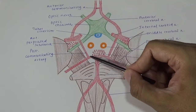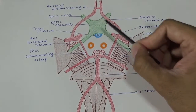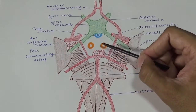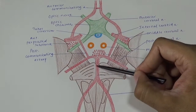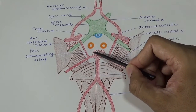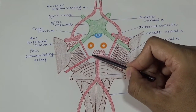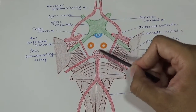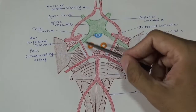Still further behind, there is a perforated substance termed the posterior perforated substance. There is also another one in relation to the optic tract called the anterior perforated substance. It is called perforated substance because branches of the posterior cerebral artery — formed by bifurcation of the basilar artery — give multiple central branches that pierce the cerebral cortex to enter deep inside, giving it a perforated appearance. Since it is oriented posteriorly, it is termed the posterior perforated substance.